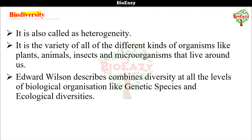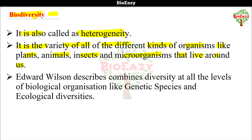Next term is biodiversity. Bio means living, diversity means wide variety — so it means the wide variety of living organisms, also called heterogeneity. It is the variety of all different kinds of organisms like plants, animals, insects and microorganisms that live around us. Edward Wilson described biological organization — genetic, species and ecological diversities — in a combined form as biodiversity.